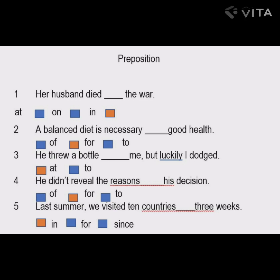The fourth sentence: 'He did not reveal the reason ___ his decision.' The options are of, for, and to. Try each and see which preposition fits. He did not reveal the reason for his decision — 'for' is the correct preposition used in this sentence.